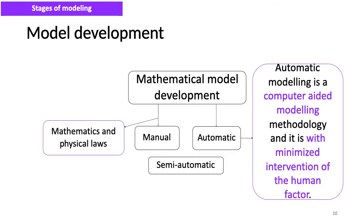The mathematical model development process could be done in different ways. We are very familiar with manual mathematical model development using mathematics and physical laws. Automatic model development is a computer-aided modeling methodology and it is with minimized intervention of the human factor. Maybe we should refer to this as semi-automatic process because at some point humans are involved in model development. We are not going to further discuss automatic model development, but about manual modeling processes.